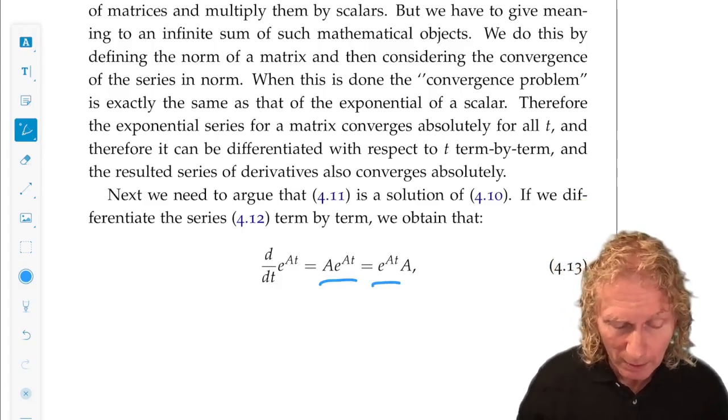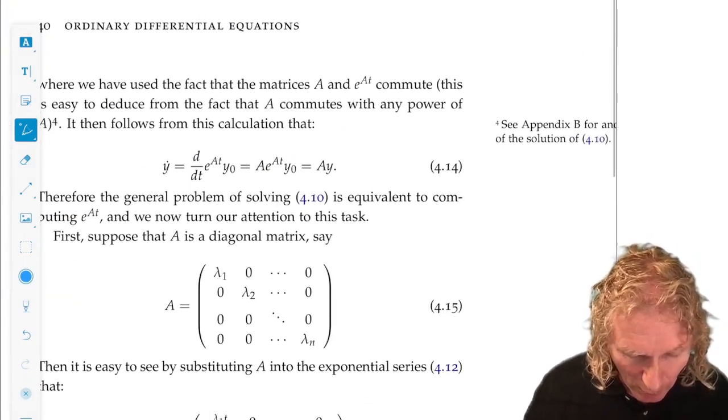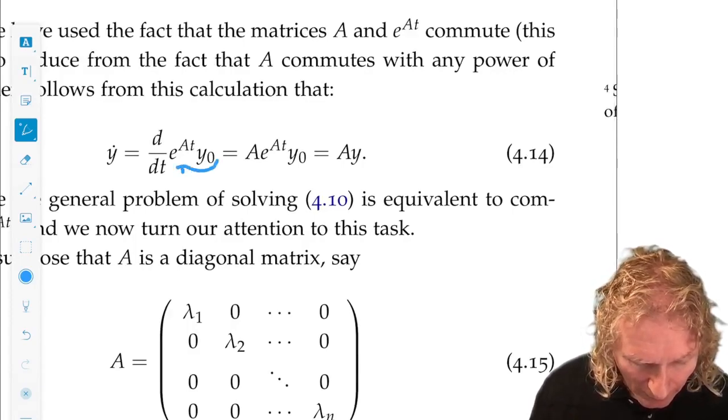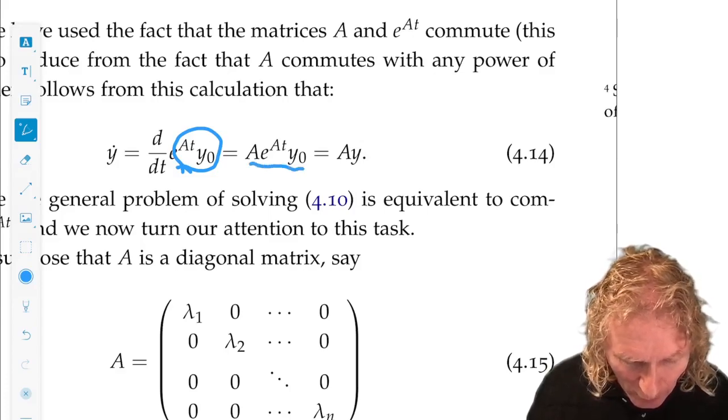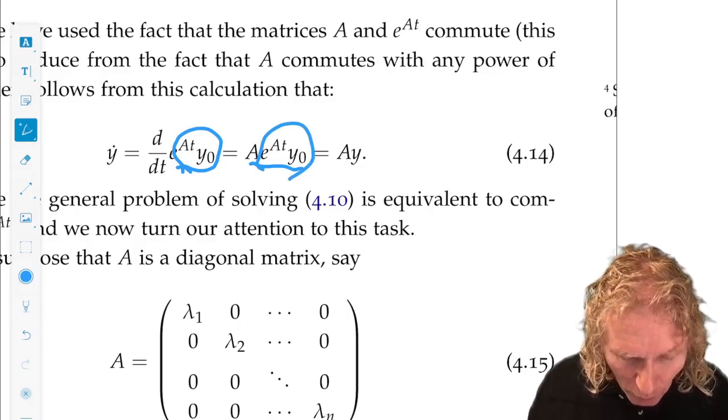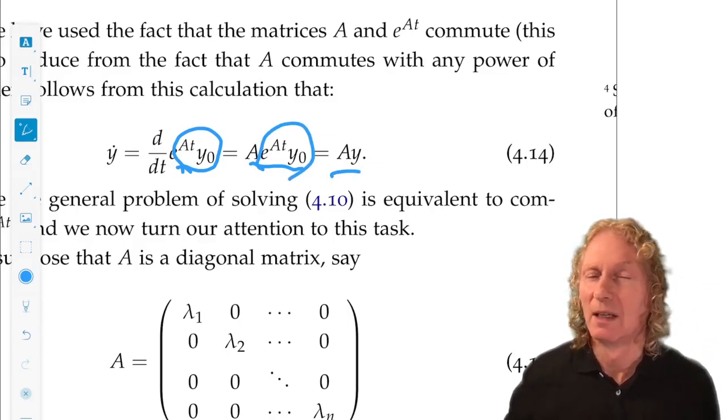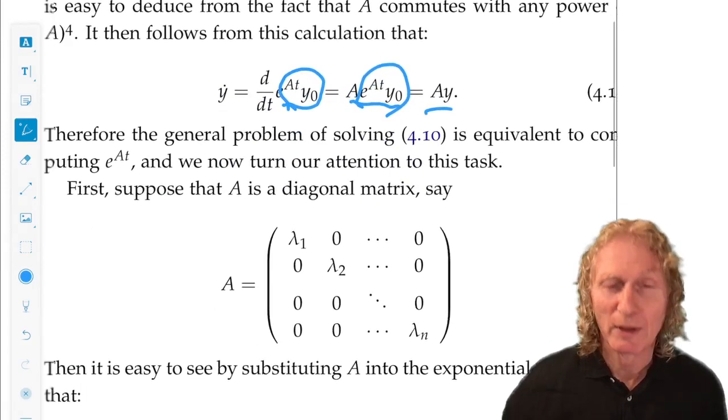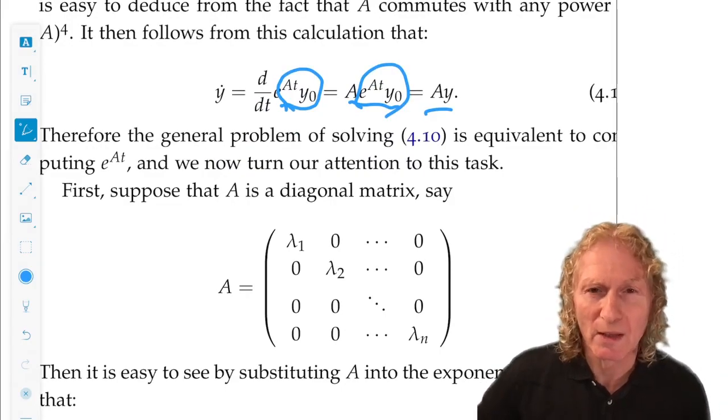So take this expression, go back and plug it into the equation. Y dot is d by dt of my candidate for a solution. That's A e to the At y naught, but e to the At y naught is just y. So that's Ay. And we're done. That was pretty slick. Go back and work out the details. But that still begs the question, how do I compute e to the At?